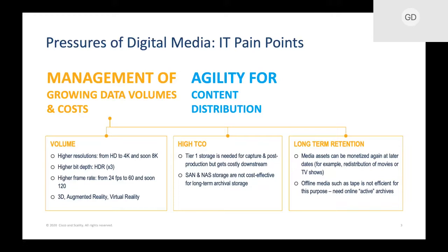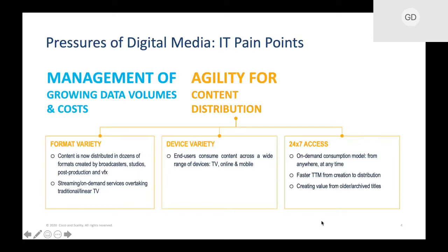From an agility perspective, we talked about different storage mediums — tier one, SAN, NAS, tape, cost to serve — but there are also varying degrees of different formats that customers are trying to manage. Streaming and on-demand services are really taking off, where people want any-device, anytime access to content — whether it's a mobile device, TV, or laptop. Having all these different device dependencies and this 24x7 on-demand access to content has truly changed dramatically over the past few years, certainly because of the consumerization of media.